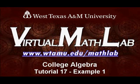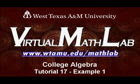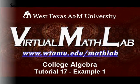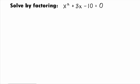Hi, welcome to the WTAMU Virtual Math Lab. This video will step you through College Algebra Tutorial 17 Example 1. In this example, we want to solve the quadratic equation x squared plus 3x minus 10 equals 0 by factoring.